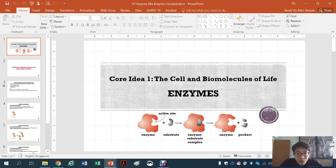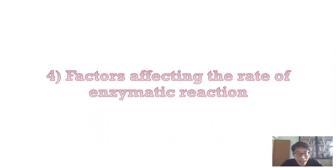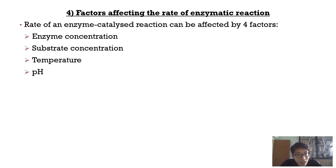This is the second lecture for enzymes. We'll be looking at the factors affecting the rate of enzymatic reaction. There are four factors mentioned in the learning outcome: enzyme and substrate concentrations, temperature, and pH.